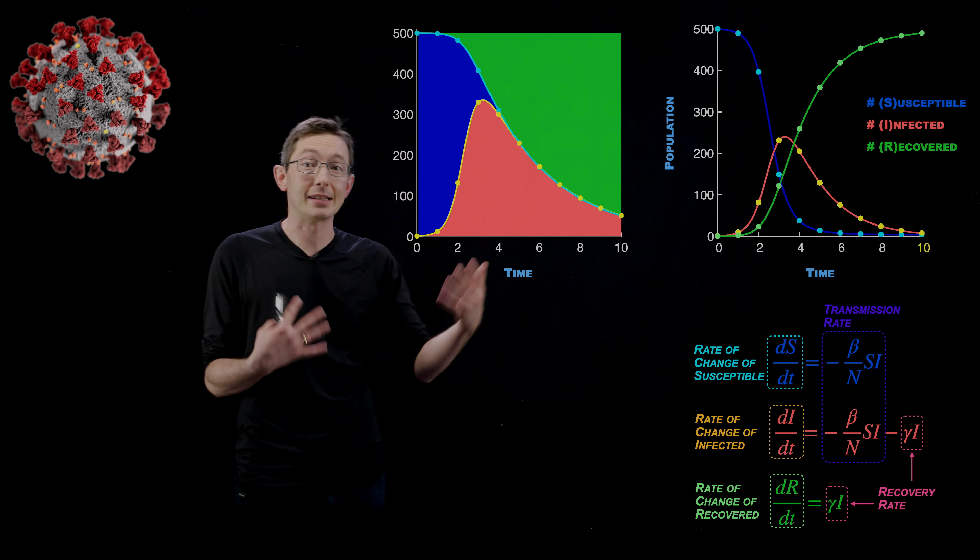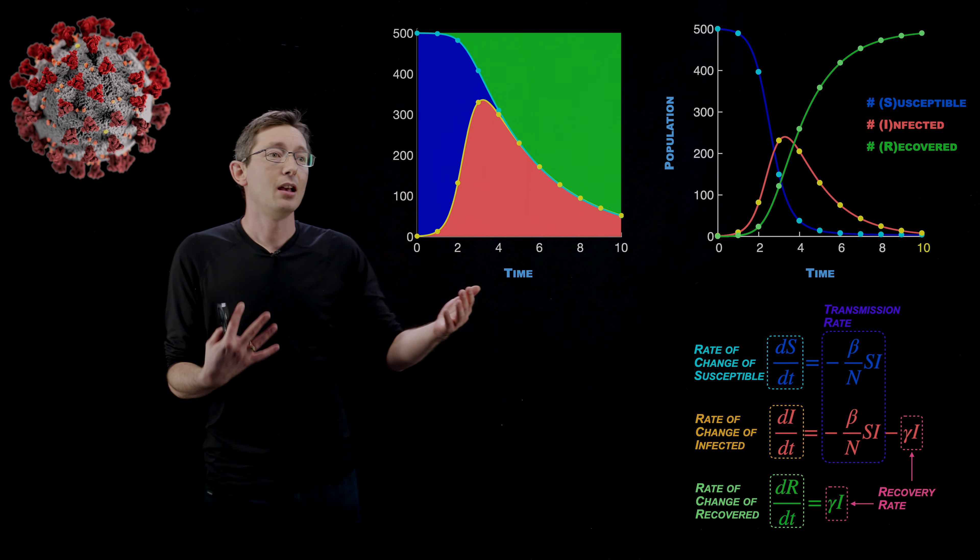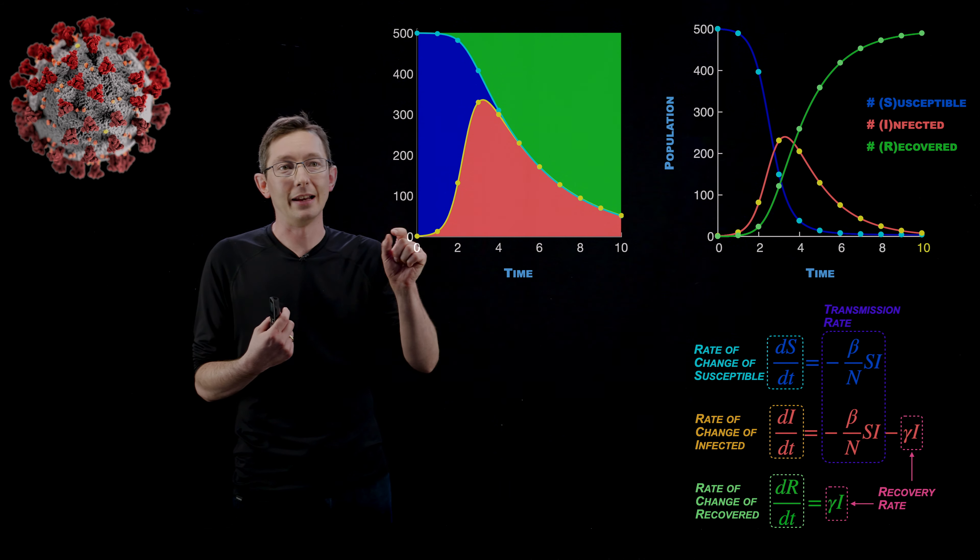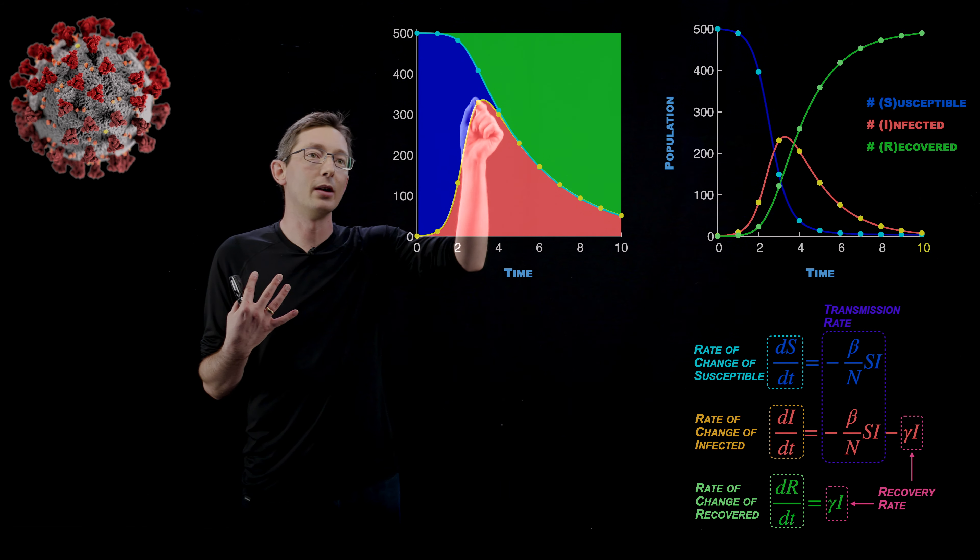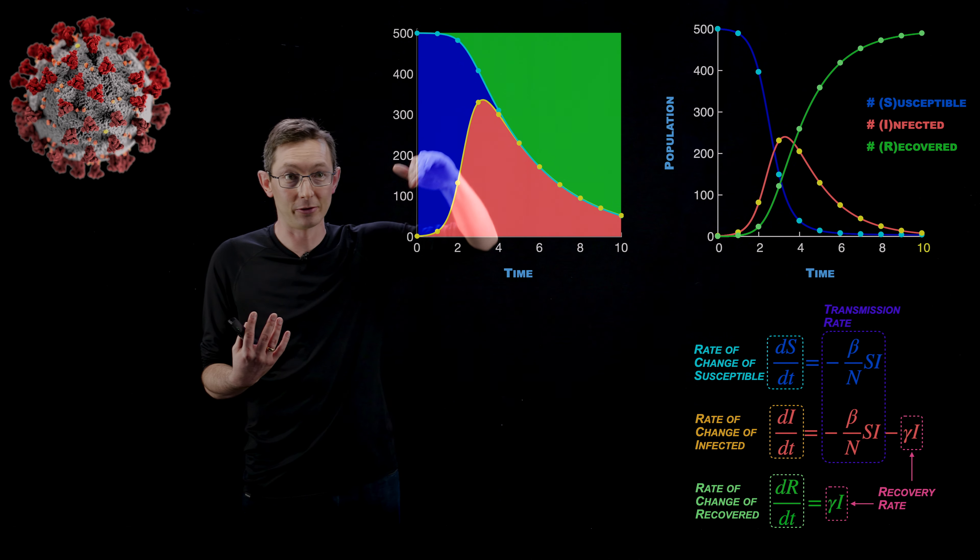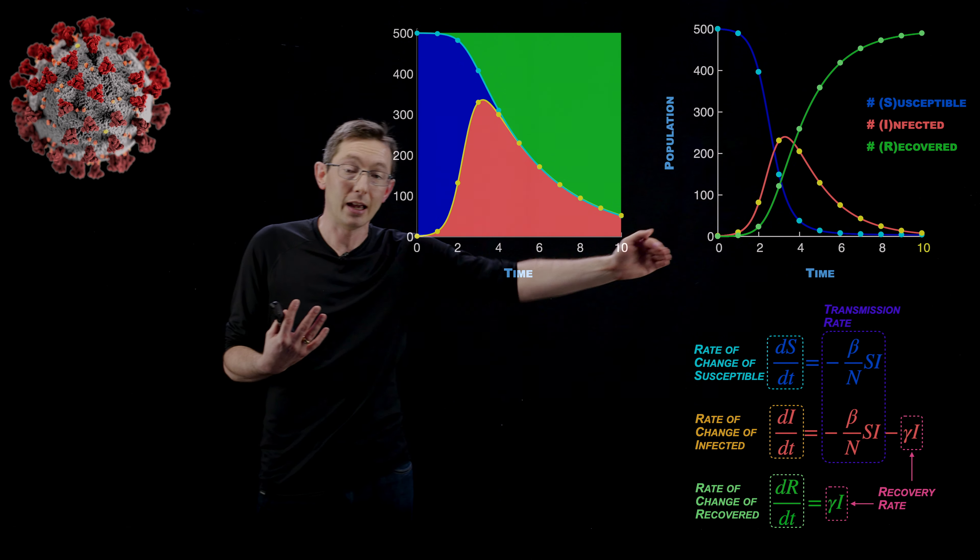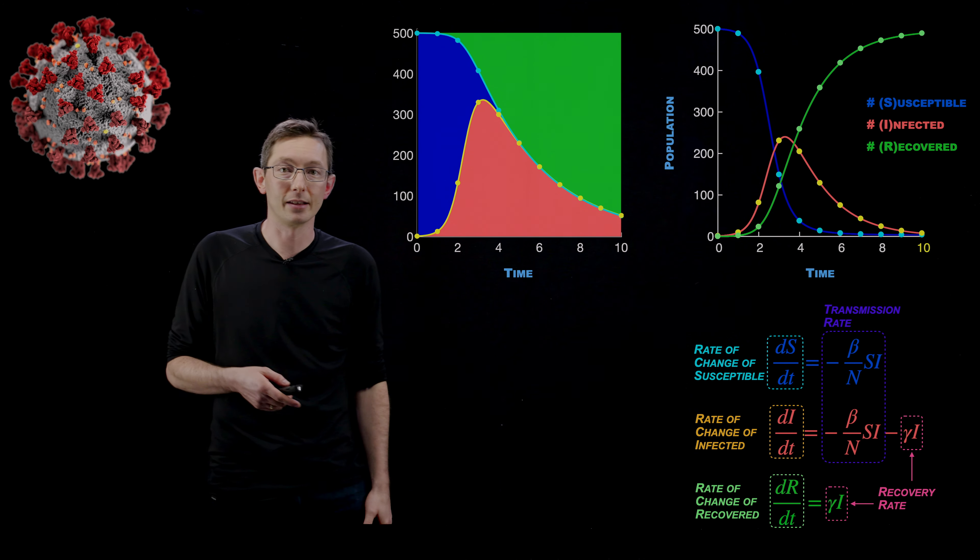I'm also going to talk a little bit about SIR models, disease models, and how again, we know that infections do grow exponentially for a time, but there are always extra factors in the model that cause the exponential growth to eventually saturate and taper off. So we're going to talk about this in the context of disease models too.